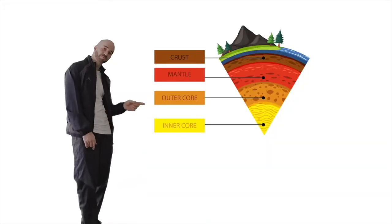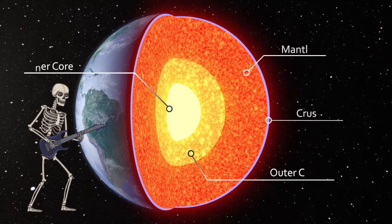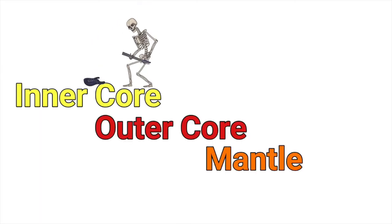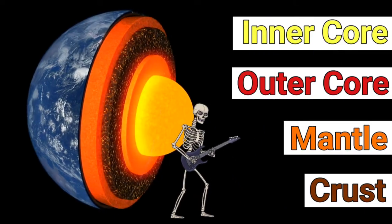Inner core, outer core, mantle, thin crust. That's what it is. Inner core, outer core, mantle, thin crust. Say it with me now. Inner core, outer core, mantle, thin crust. Four layers. Inner core, outer core, mantle, thin crust.